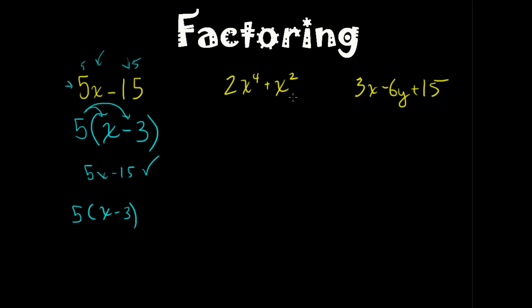The next one: 2X to the fourth plus X squared. What is similar within both of these expressions? The X squared. So you get X squared times—the first one's going to be 2X squared, and if I factor an X squared out of X squared, I get 1. If I multiply these back together or distribute, I get 2X to the fourth plus X squared, which is what we started with. The final factored solution is X squared times 2X squared plus 1.